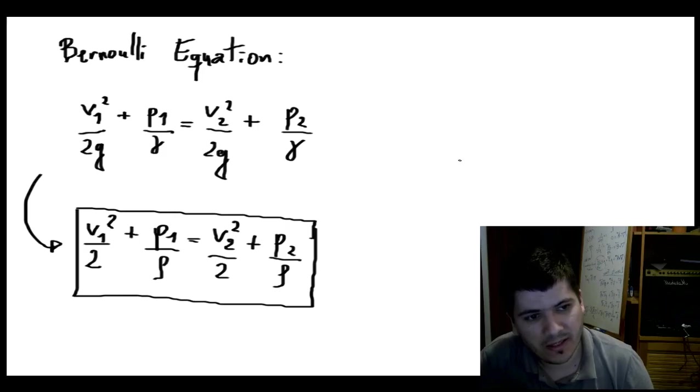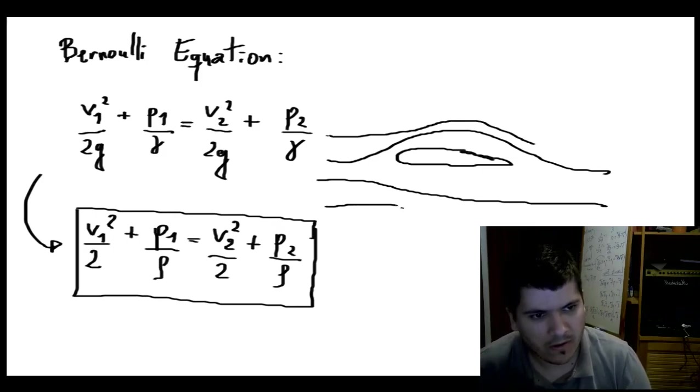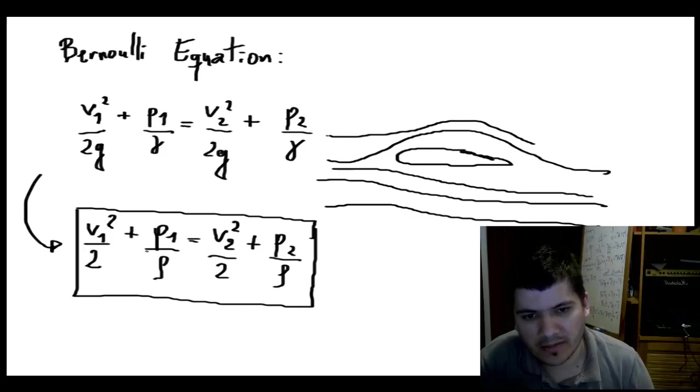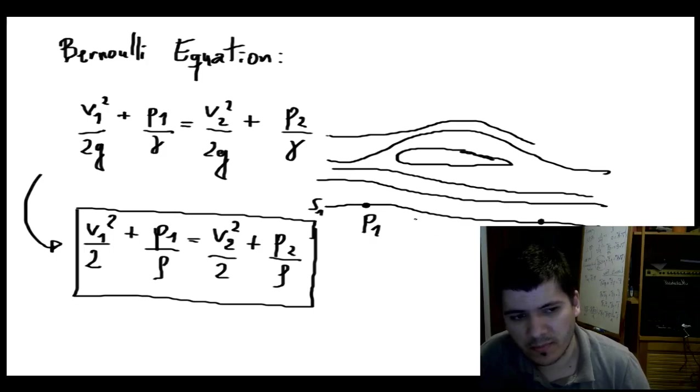And of course, we have to apply this equation on the same streamline. Let's say we have a wing, so air is flowing. Here we have the streamlines, and here we have another streamline. So in order to apply this equation, we must apply between two points which are on the same streamline. Let's say we have this streamline here, and here we have our point 1 and our point 2.